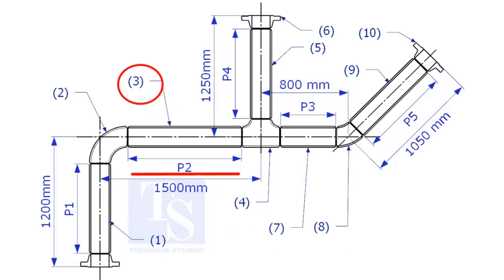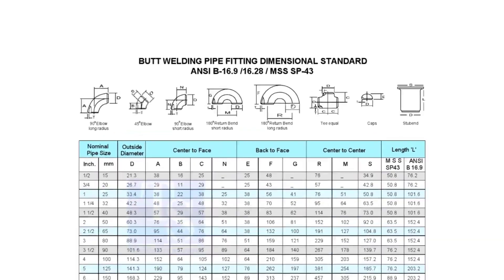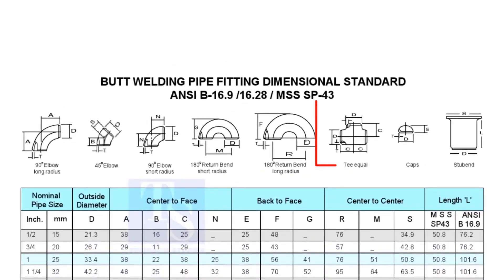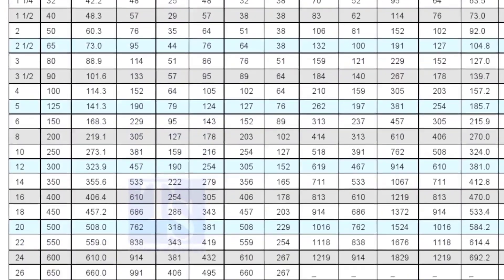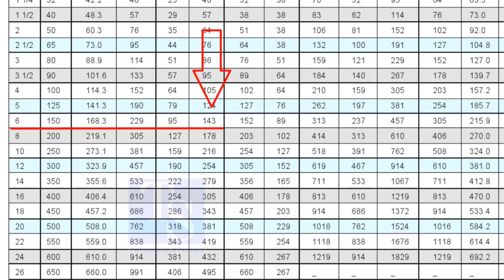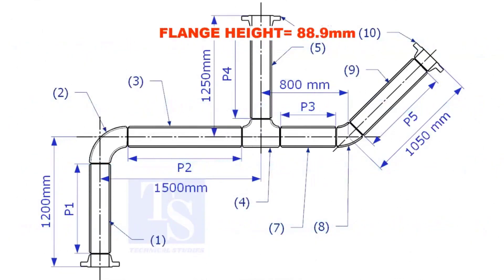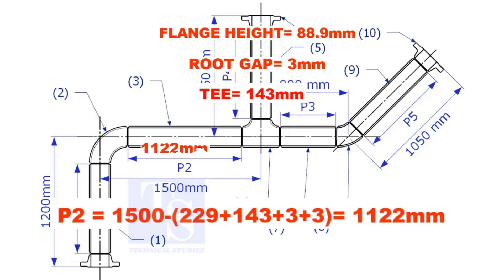Let us calculate the length of item number 3. We already know the takeoff length of the 6 inch long radius elbow. Now, check the chart for the takeoff length of the equal T. It is 143mm. The length of item number 3 is 1,122mm.